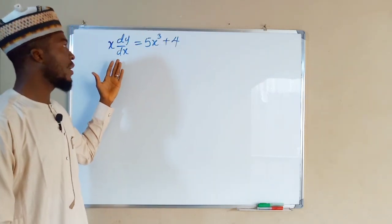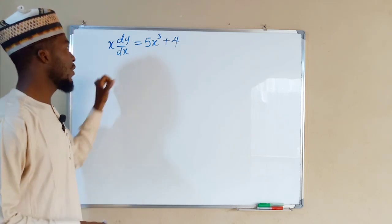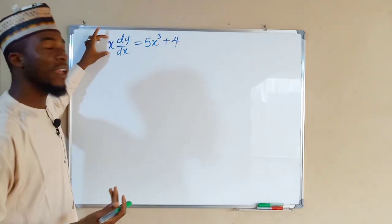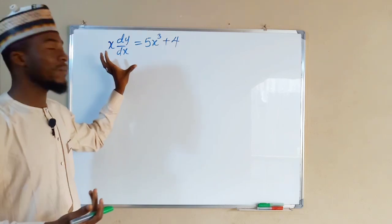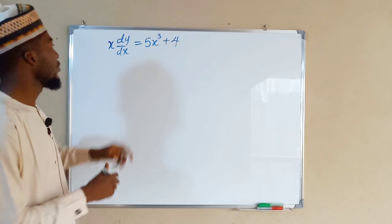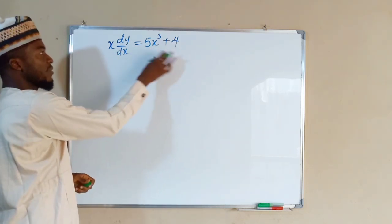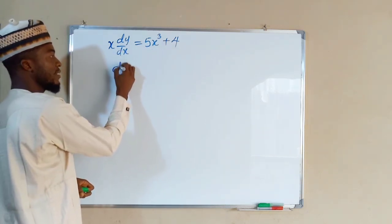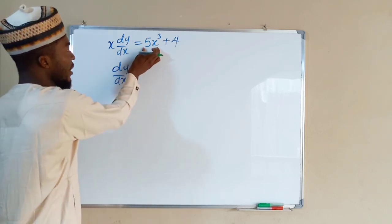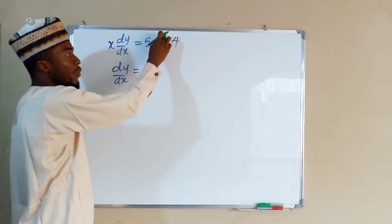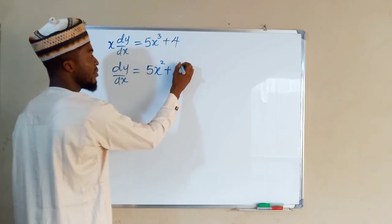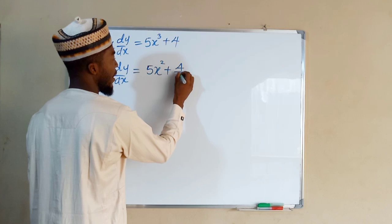Our second question is not in the form dy/dx equals f(x), because we have an x multiplying our derivative. All we have to do is divide both sides by x to eliminate it. Dividing both sides by x, we have dy/dx on the left-hand side. On the right-hand side, dividing each term by x reduces the power of x by one, giving five x to the power of two, and the last term becomes four over x.